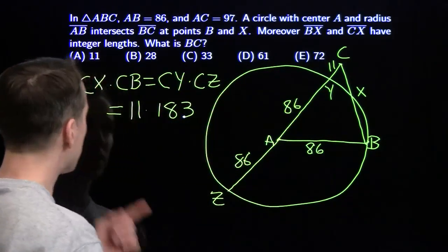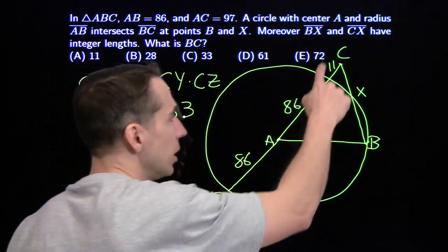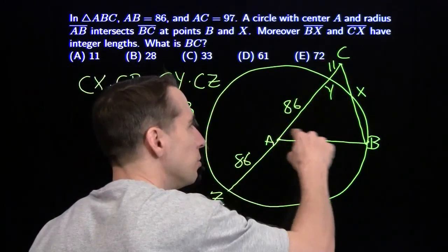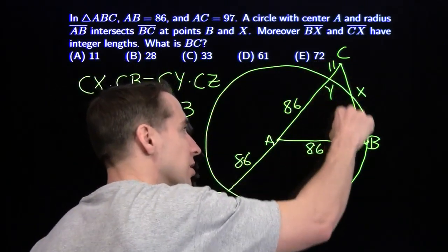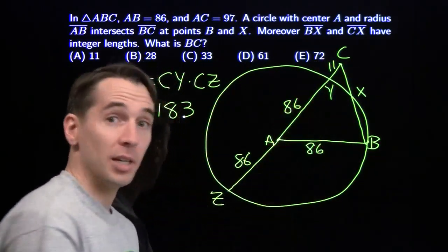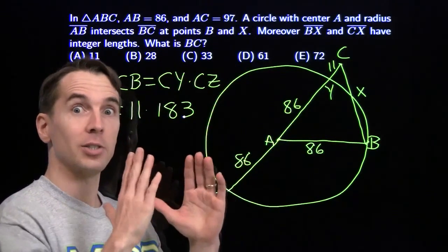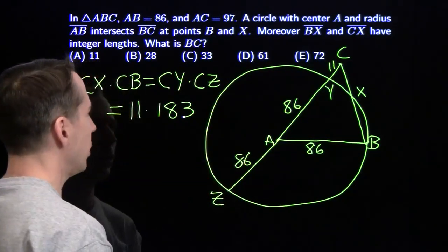Now we might jump in and say, okay, we can just let CX be 11 and CB be 183, but this wouldn't be much of a triangle if this is 183, because 86 plus 97, that's 183, that would mean our triangle is actually a line segment because of the triangle inequality.